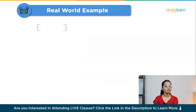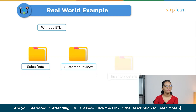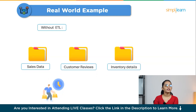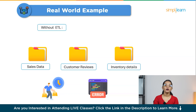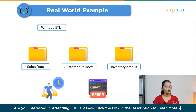Now imagine the same scenario without ETL. Your sales data is in one system, customer reviews are in another, and inventory details are stored separately. The data is messy — some formats don't match and there are duplicate entries. Combining all this data manually is time-consuming and error-prone. Every time you need a report, you spend hours or even days pulling data from different sources, cleaning it up and organizing it yourself. By the time you figure out which products are selling the most, the trend might already be over. Without ETL, you're stuck doing manual work and important insights are delayed or missed, and decision-making becomes slower.